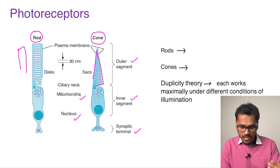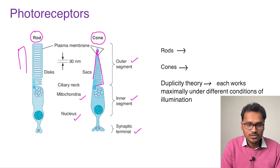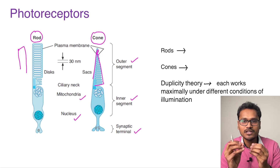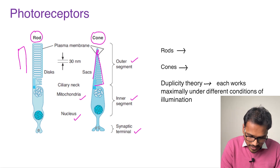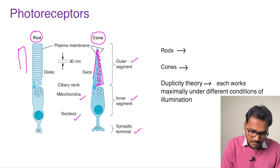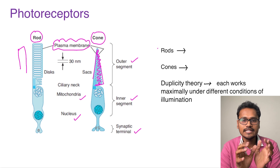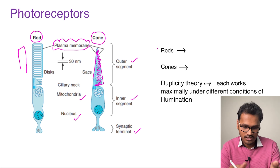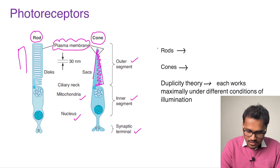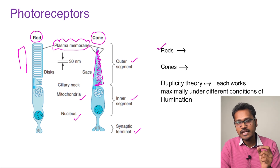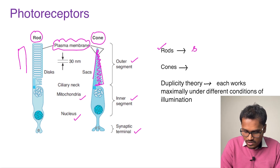In the outer segment, the plasma membrane of the cell is modified into the rod and cone structure. This plasma membrane is the storehouse — it stores the entire photopigment of the rods and cones. Rods are important for night vision, vision that does not perceive color. This type of vision is called scotopic vision.